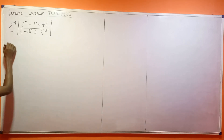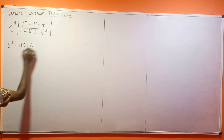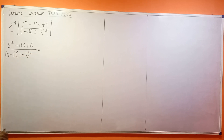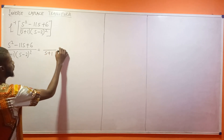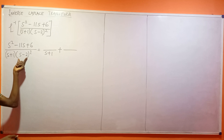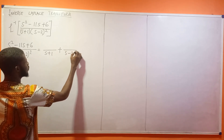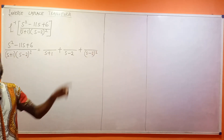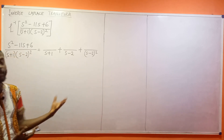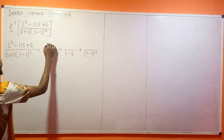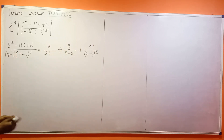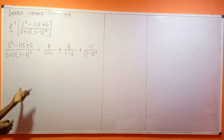So I'm going to say s squared minus 11s plus 6 divided by (s+1)(s−2)² equals A over s+1, plus B over s−2, plus C over (s−2)². Since s−2 is a linear factor that is repeated, we get those two terms. The numerators are A, B, and C. Now let us find the LCM.